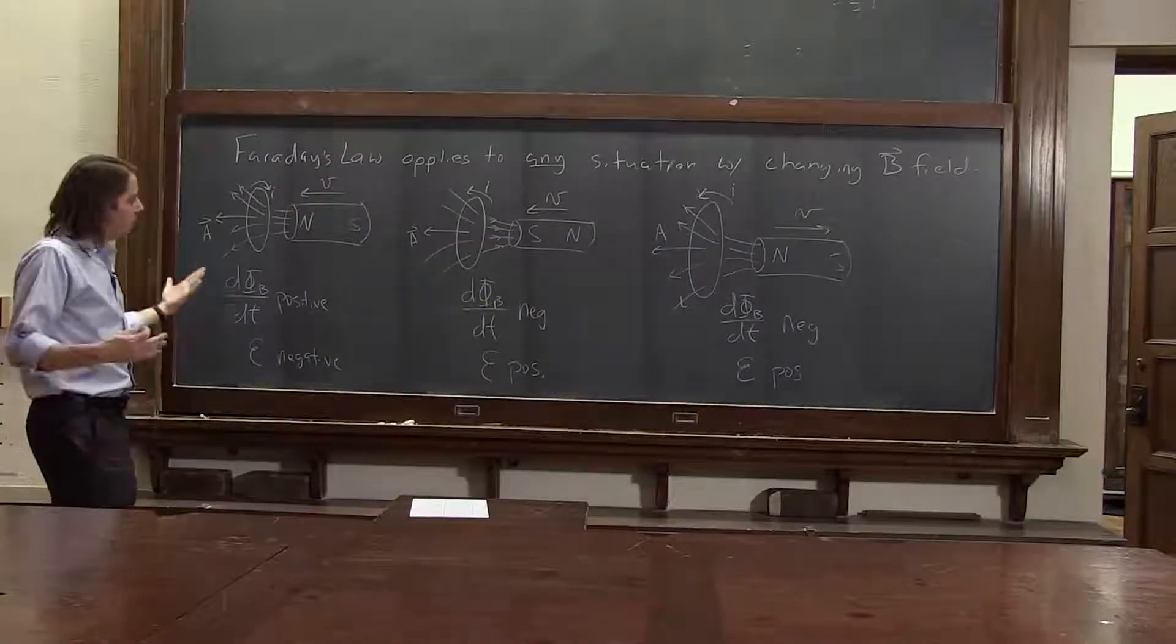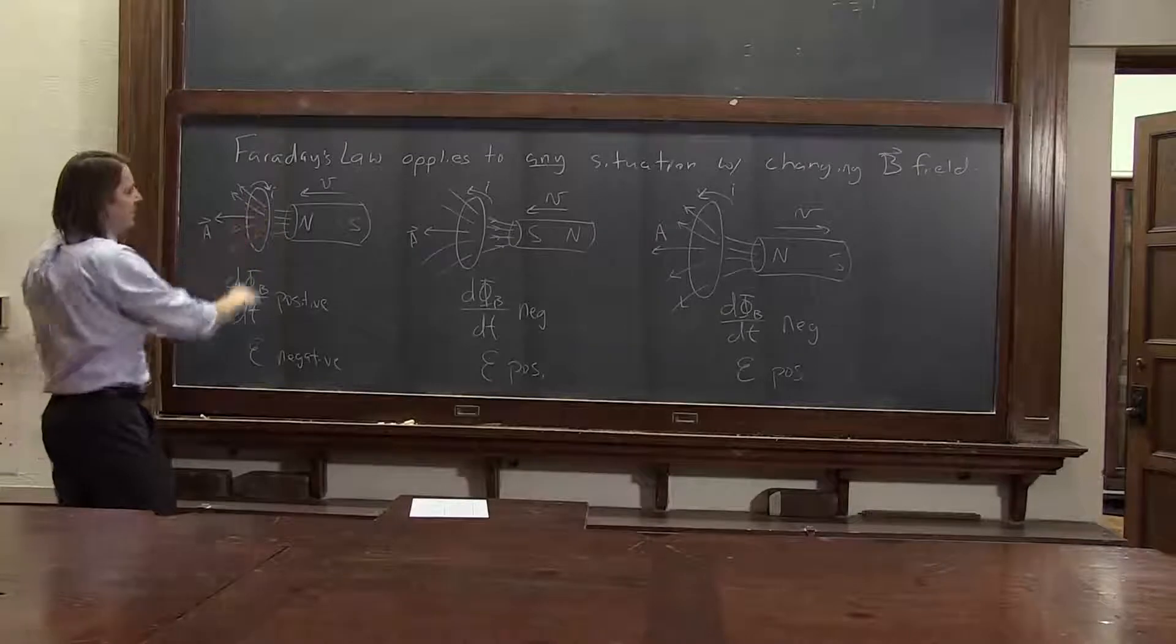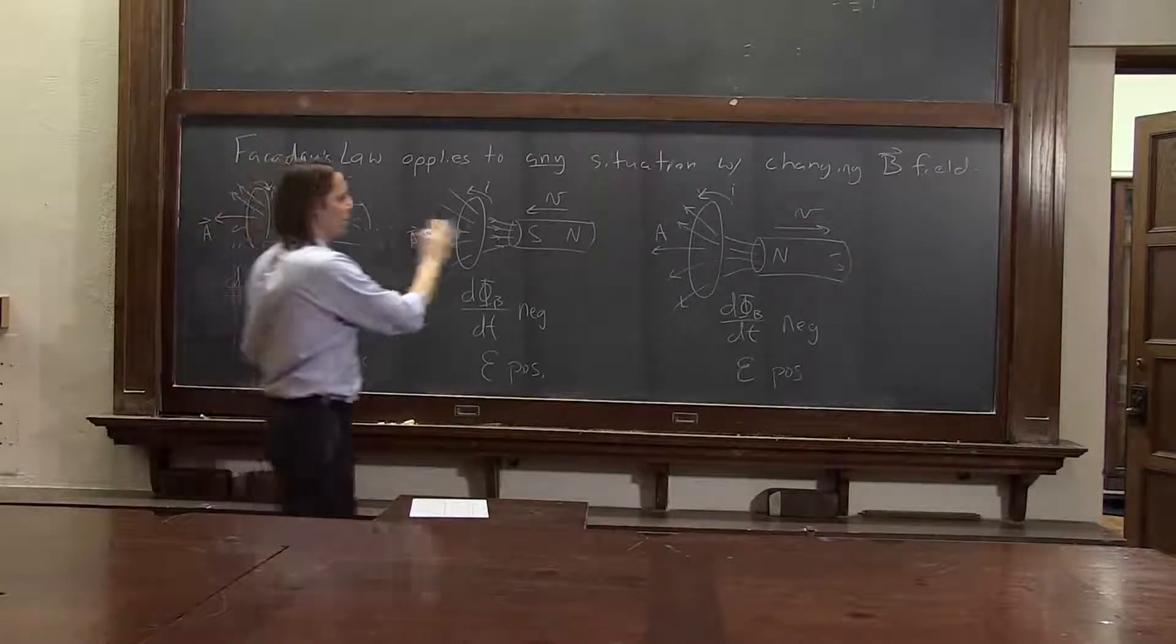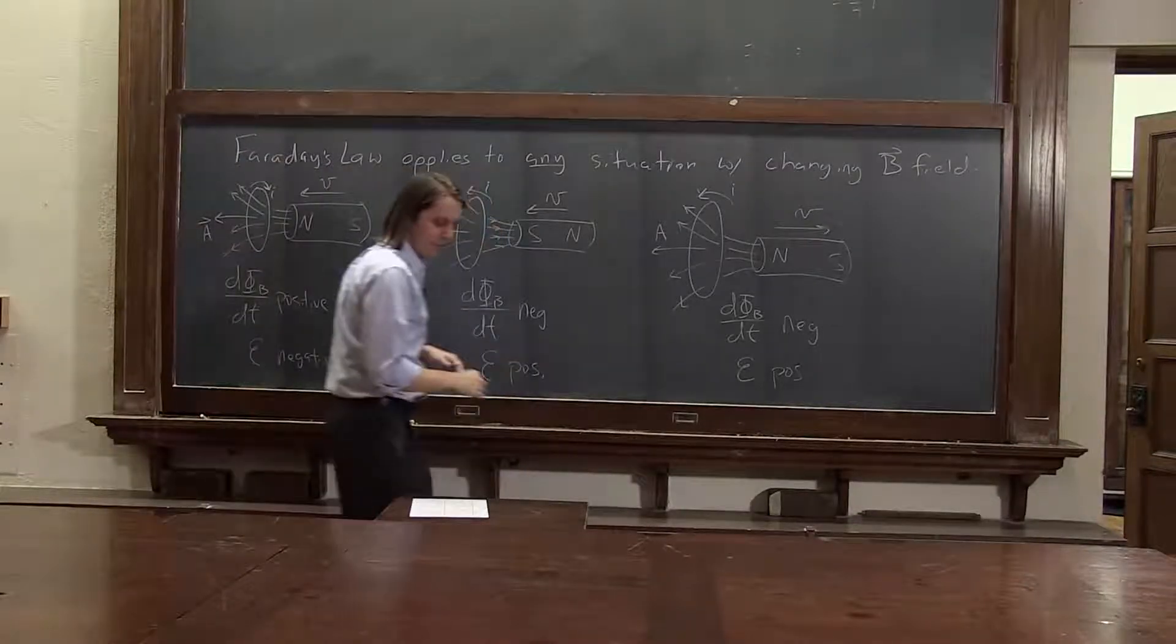So you can see, the EMF you get depends on many things. It depends on which way the B field is, whether the B field is going up or down, north, south, south, north. All these things can flip it back and forth.